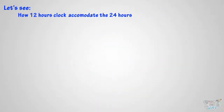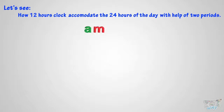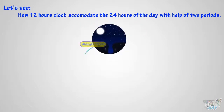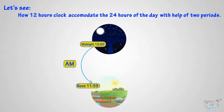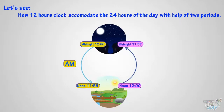Let's see how a 12-hour clock accommodates 24 hours of the day with the help of two periods, a.m. and p.m. The time from midnight 12 to noon 12 — more precisely, 11:59 at noon — is called a.m. time. The time from noon 12 to midnight 11:59 is called p.m. time.